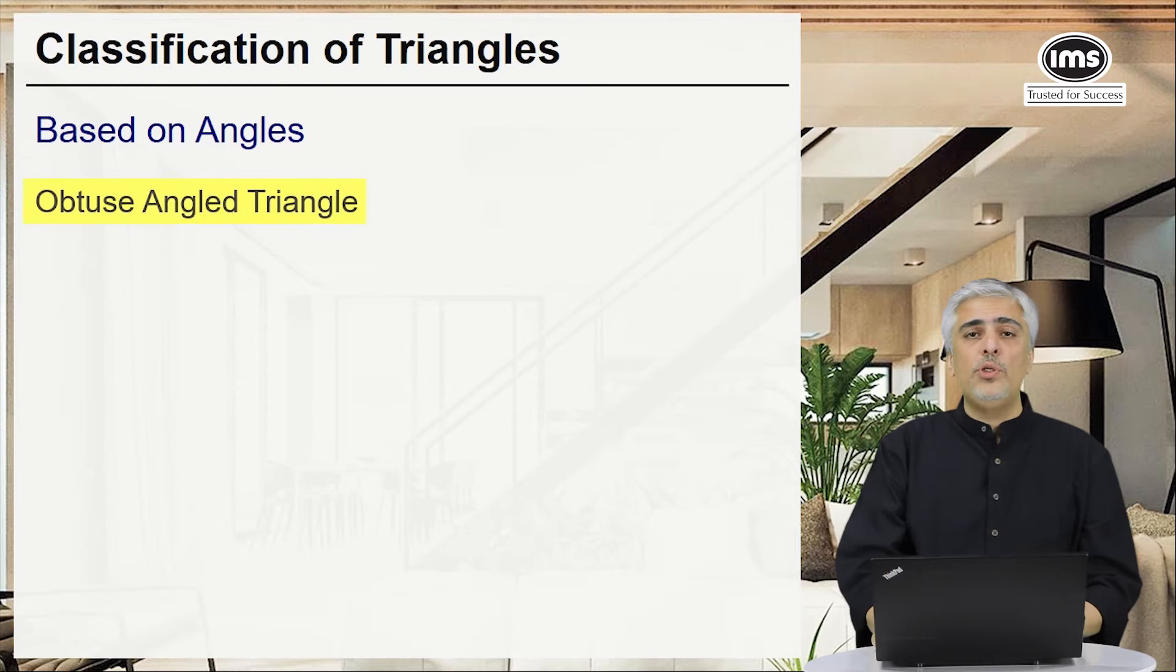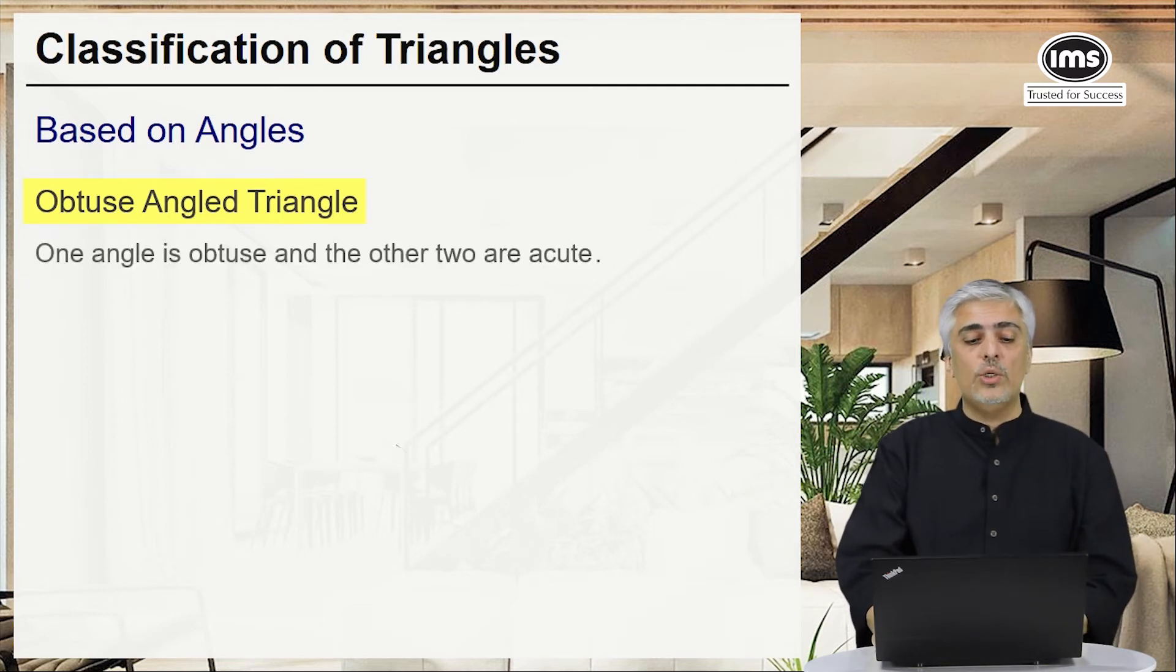Similarly, we have an obtuse angle triangle. What's an obtuse angle triangle? One where one angle is greater than 90, only one angle, and the other two angles will be acute.